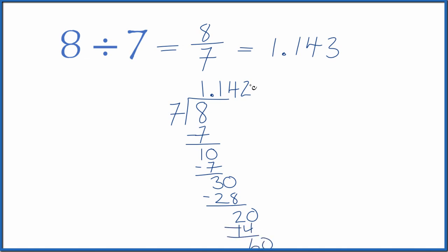Subtract and get 6. And 8 times 7, that's 56. So we'll stop there and this is what we get. We rounded this up here to 1.143.